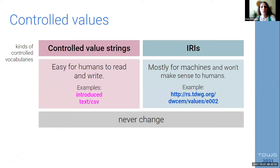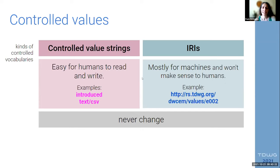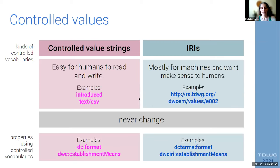One important distinction: controlled value strings are for use with concepts. Controlled value strings have to be strings that are easy to read — human readable — while IRIs are for machines to use and are usually very difficult for humans to interpret. One thing they have in common is that they never change. Some properties expect a controlled value string and others may expect an IRI.